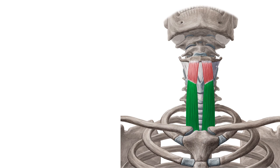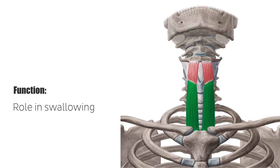The infrahyoid muscles are responsible for the positioning of the hyoid bone along with the suprahyoid muscles. They play an active role in swallowing and the movement of the larynx. The sternothyroid depresses the larynx, whereas the thyrohyoid elevates it when the hyoid bone is fixed.